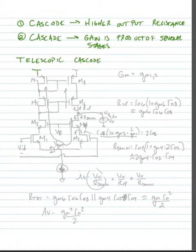So in the telescopic cascode, we start with our normal cascode current source as the load.